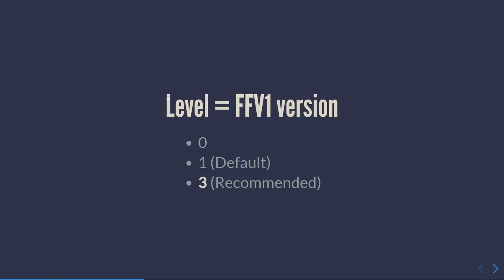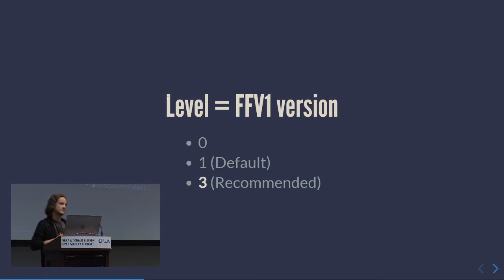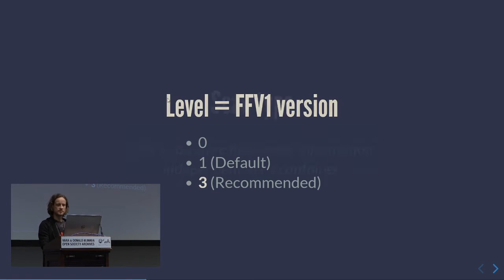On FFV1 versions: there's version zero — we programmers start counting at zero. That was the first version, with single threading. Version one is currently the default if you don't explicitly choose another. Version three is the recommended one — it has all bells and whistles currently available, like multi-threading and slice CRCs.